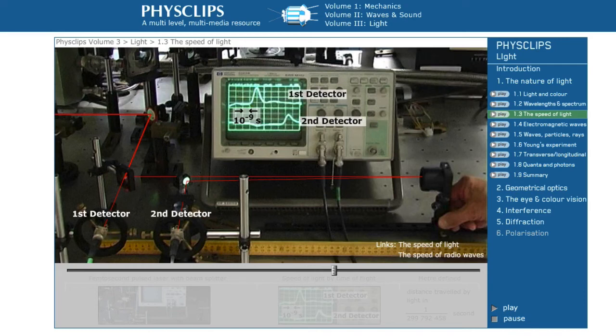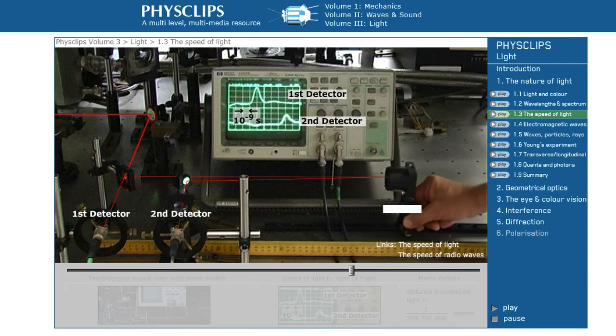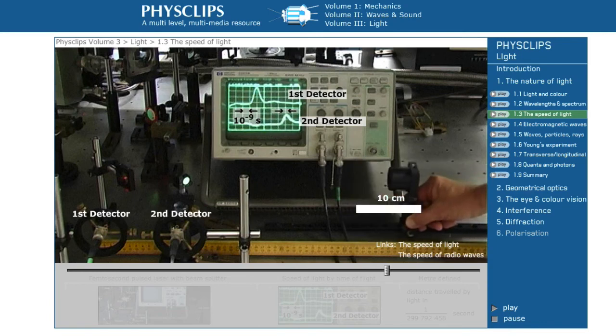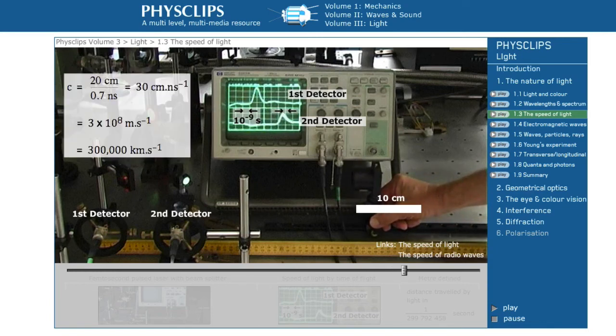The light travelling via the second path arrives later, of course. When I move the mirror by 10 centimetres, the second round trip path is decreased by 20 centimetres. This reduces the delay by 0.65 nanoseconds. Dividing distance by time gives the speed of light in air 30 centimetres per nanosecond.